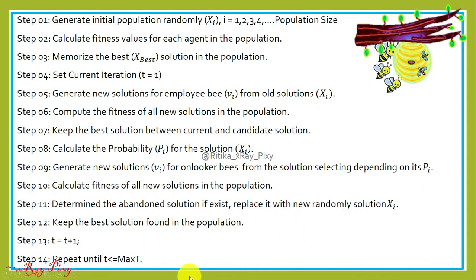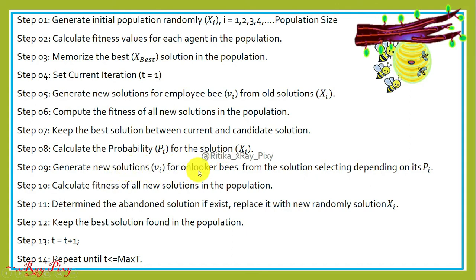In summary: initialize the population randomly, compute the fitness value, memorize the best solution, set the counter, generate new solutions for employee bees, compute fitness value and fitness factor, compute probability for each solution, generate new solutions for follower bees, compute fitness value and fitness factor, apply greedy selection, keep the best solution, increment the counter, and repeat until the stopping criteria is met. That's all about this video — if you have any questions, comment below. Thanks for watching.